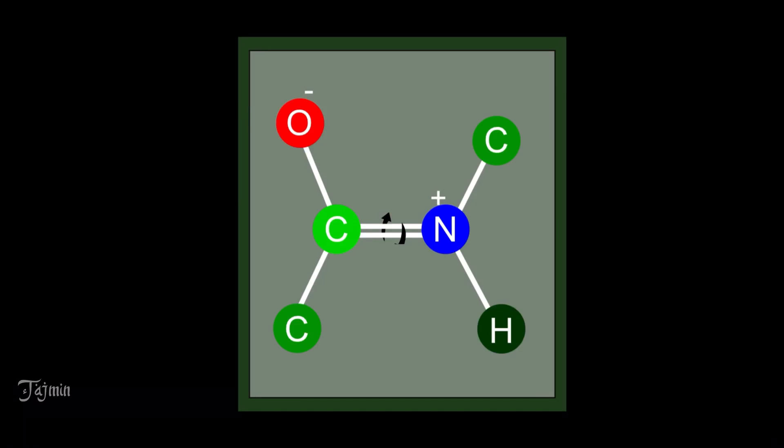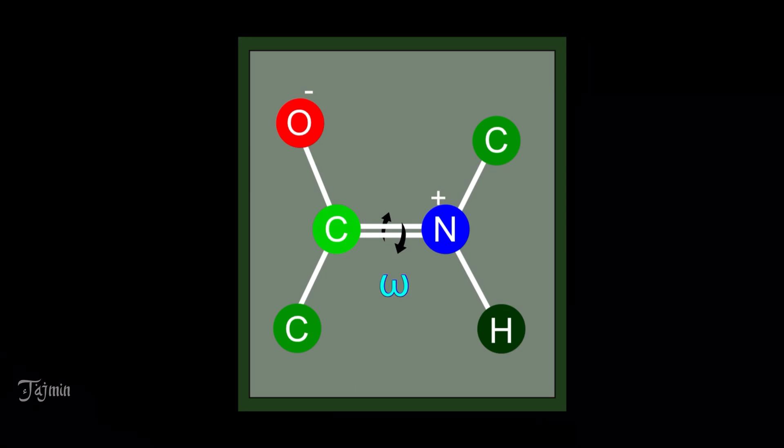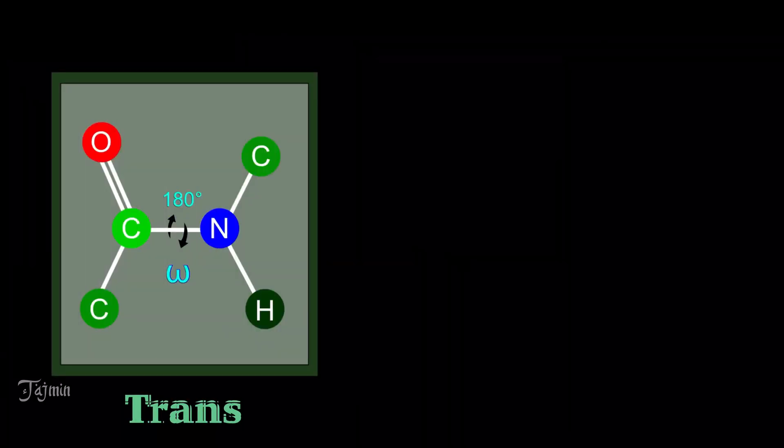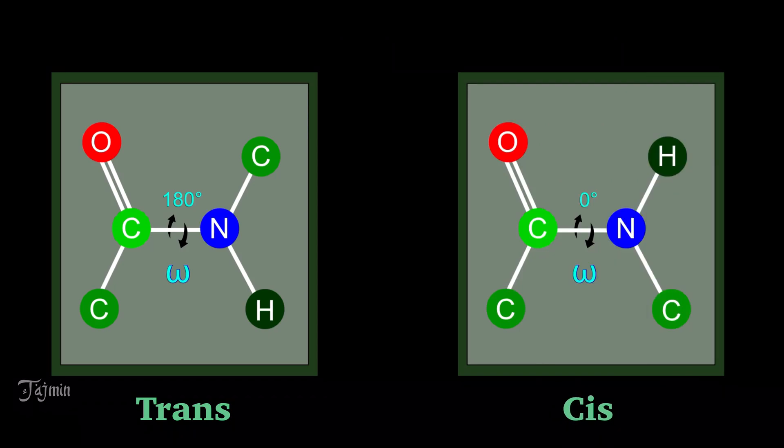The rotation around the peptide bond called as omega which is closely restricted to 180 degrees in trans configuration and 0 degrees in cis configuration. The difference between these two configurations lies in the arrangement of C alpha carbon atoms.